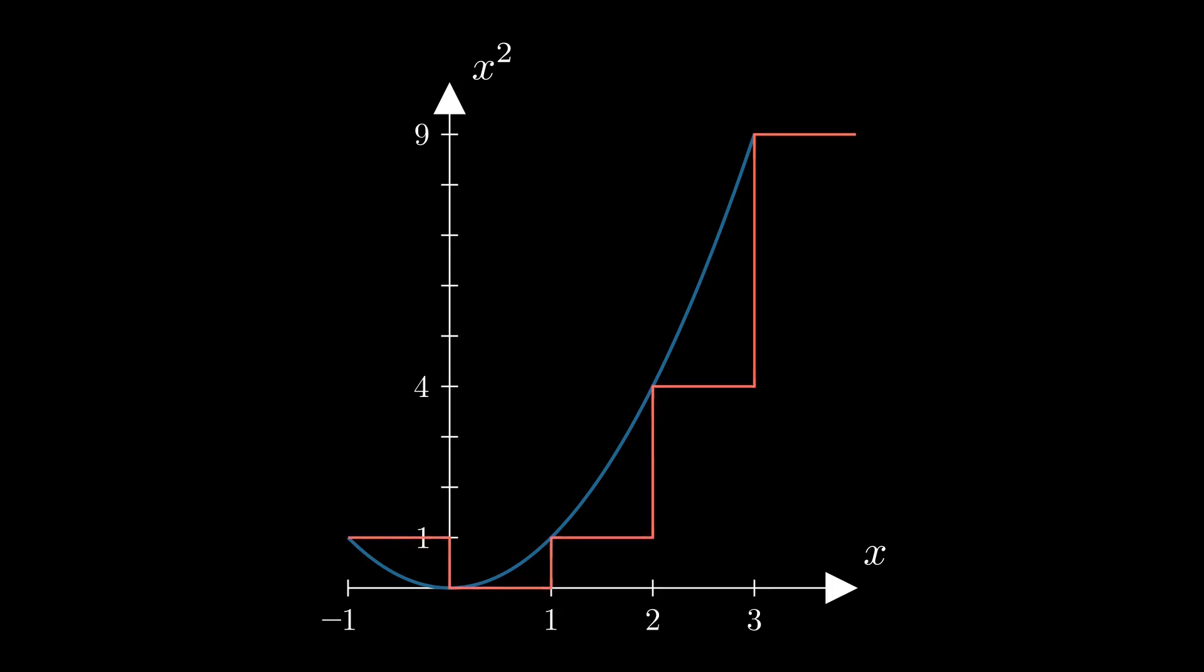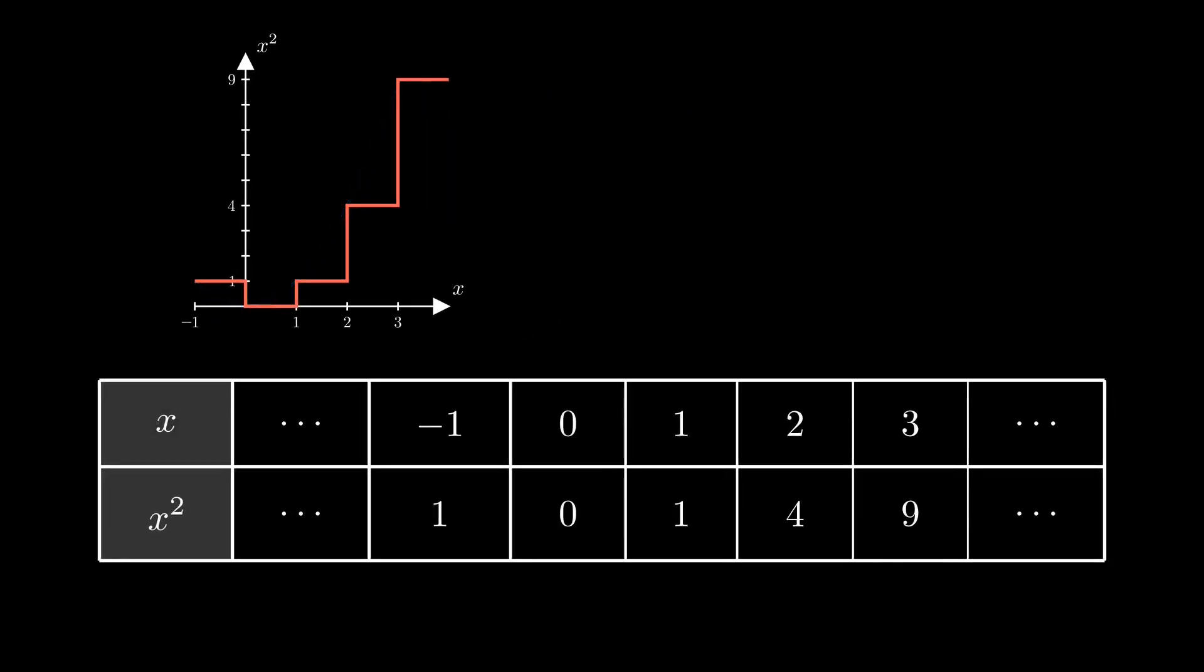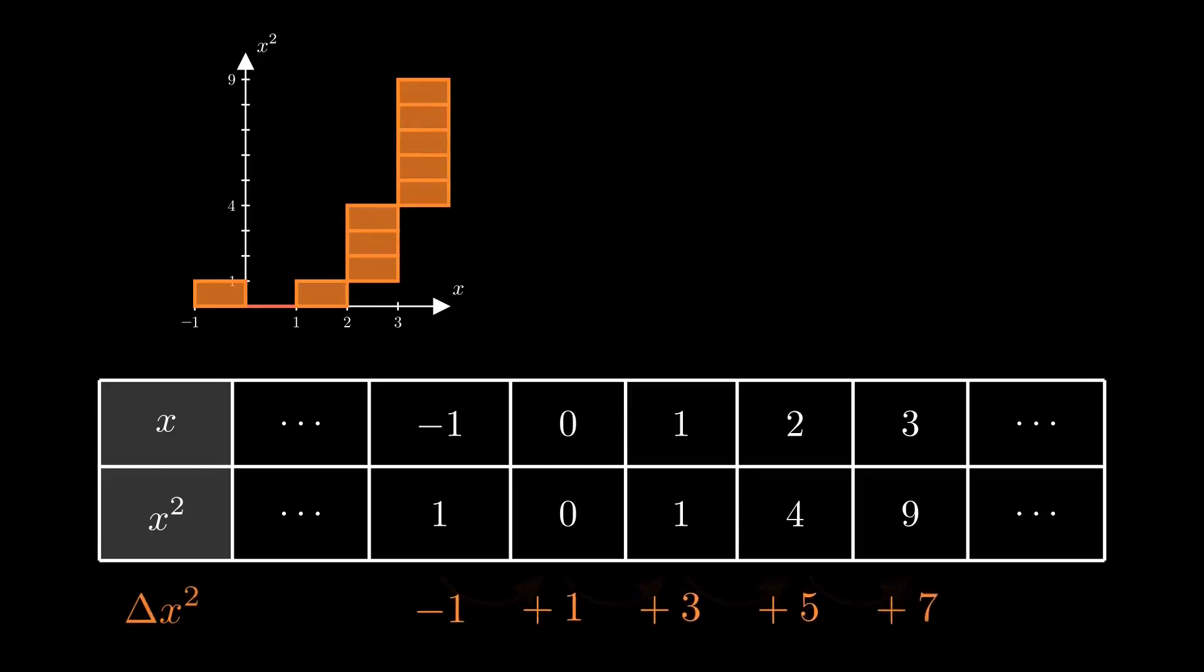But now, in discrete calculus, we only care about the discrete rate of change. How much is the value of x squared changing at each step here? In other words, what do we need to add to x squared to get x plus 1 squared?